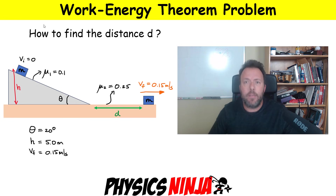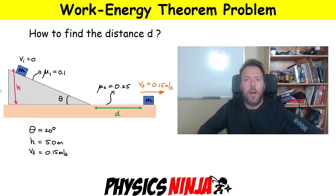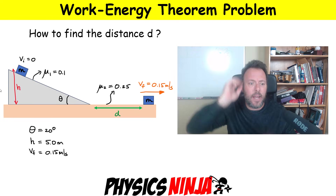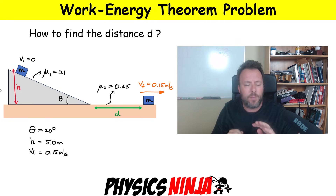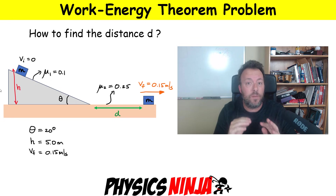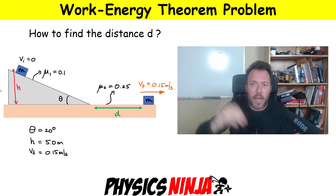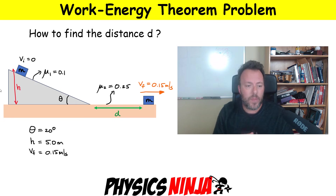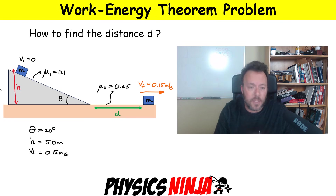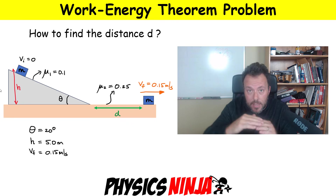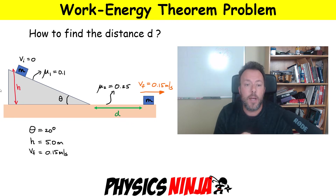Here's the problem. We have a block that starts at the top of a ramp as shown. The ramp has a height of 5 meters. It starts from rest, so its initial velocity is zero, and then it slides down the ramp. The angle with the horizontal is 20 degrees, and once it's done sliding off that ramp it hits a flat section of the road.